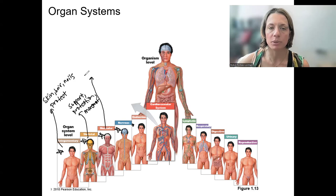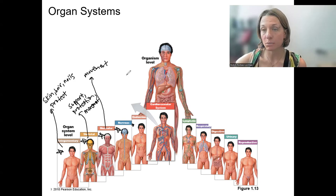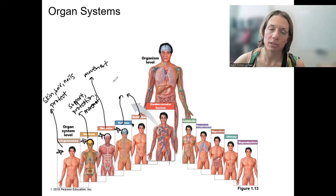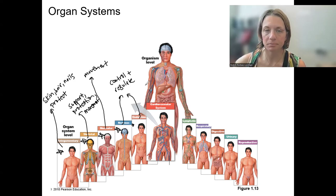Muscular — this is movement. Skeletal muscle is probably what you think of the most, but it's also cardiac and smooth muscle that also both move. Nervous and endocrine I'm going to put together — they're both control systems. So they control and regulate basically all of our body's processes, and they're going to integrate quite a bit.